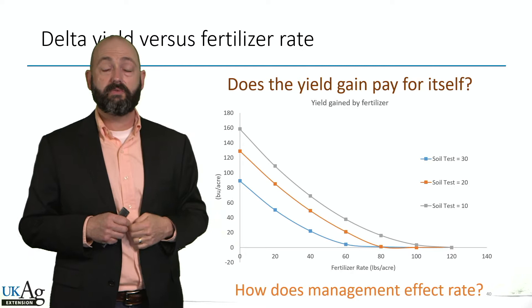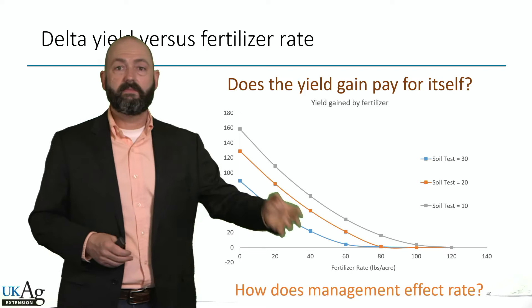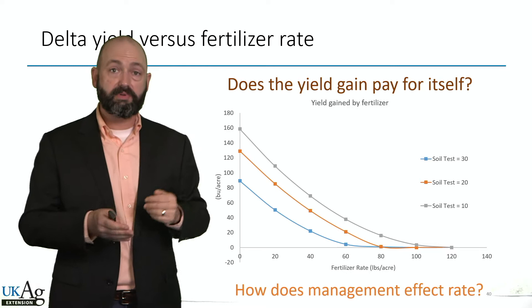We've got to look at that delta yield — how many bushels do I get for that 5, 10, 15, 100 pounds of fertilizer — and that's different for the different fields. So this plays into that recommendation system.